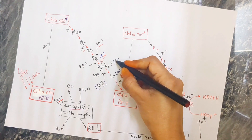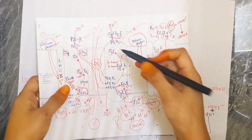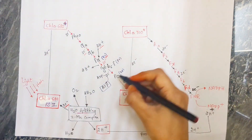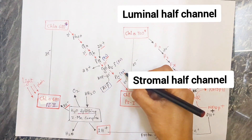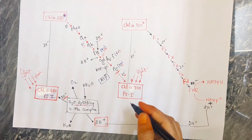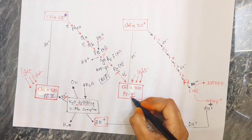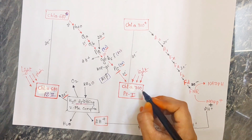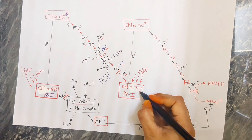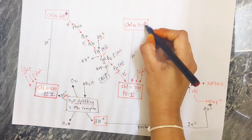After cytochrome B6F — which also contains iron — it gives the electrons to plastocyanin, that is PC, which contains copper. There were two electrons. Now they reach into photosystem 1, which has the chlorophyll molecule P700, absorbing light of 700 nanometers. After absorbing this radiant energy, this chlorophyll also gets excited.